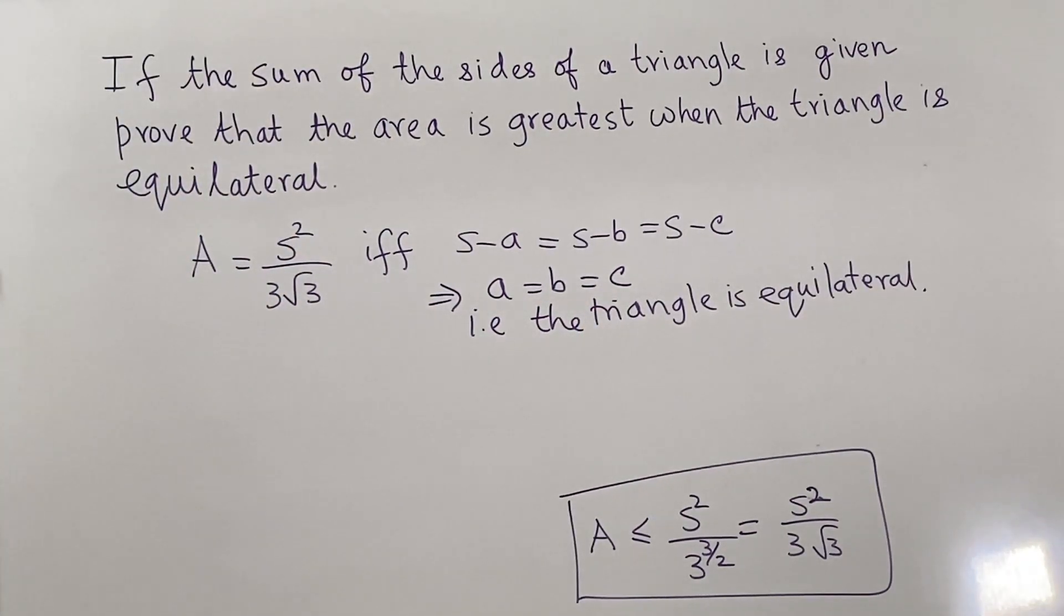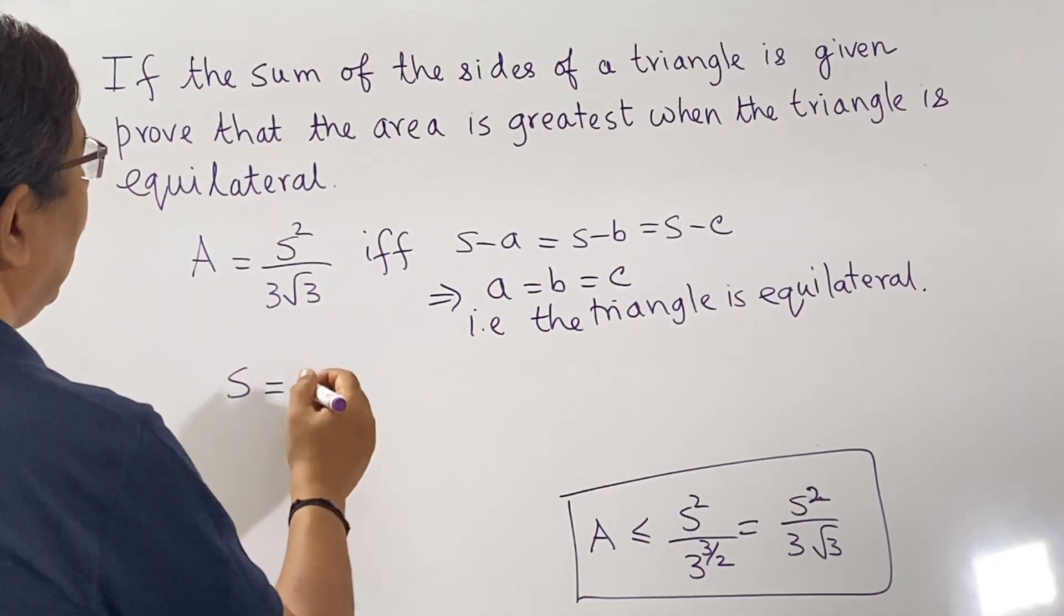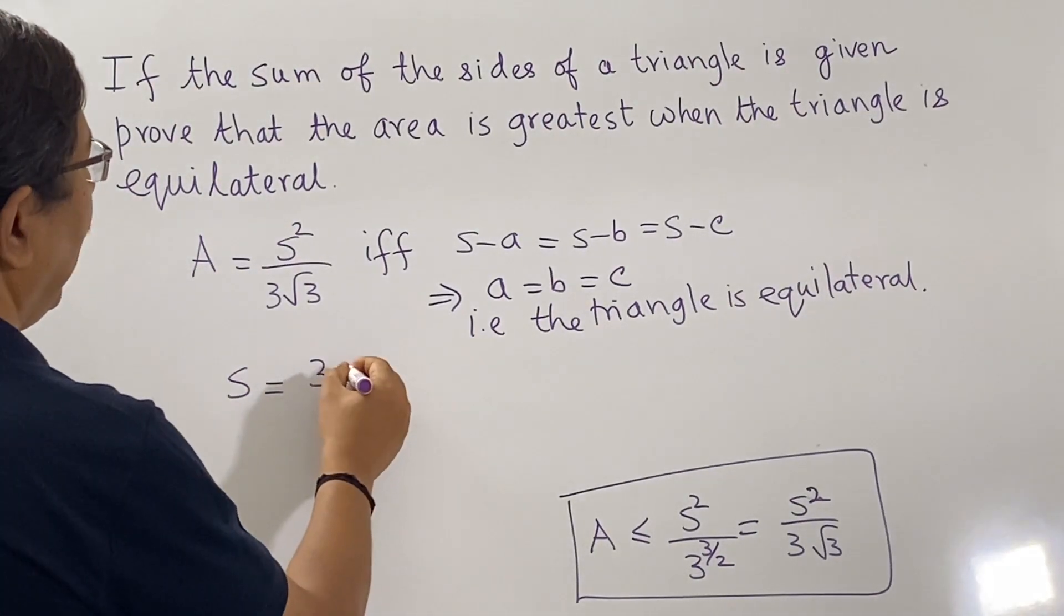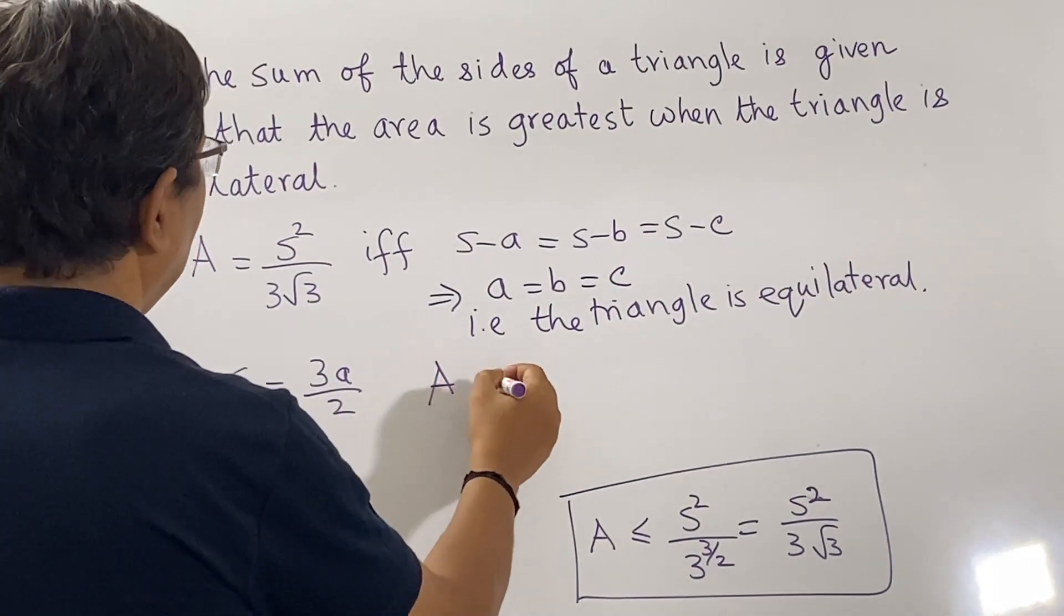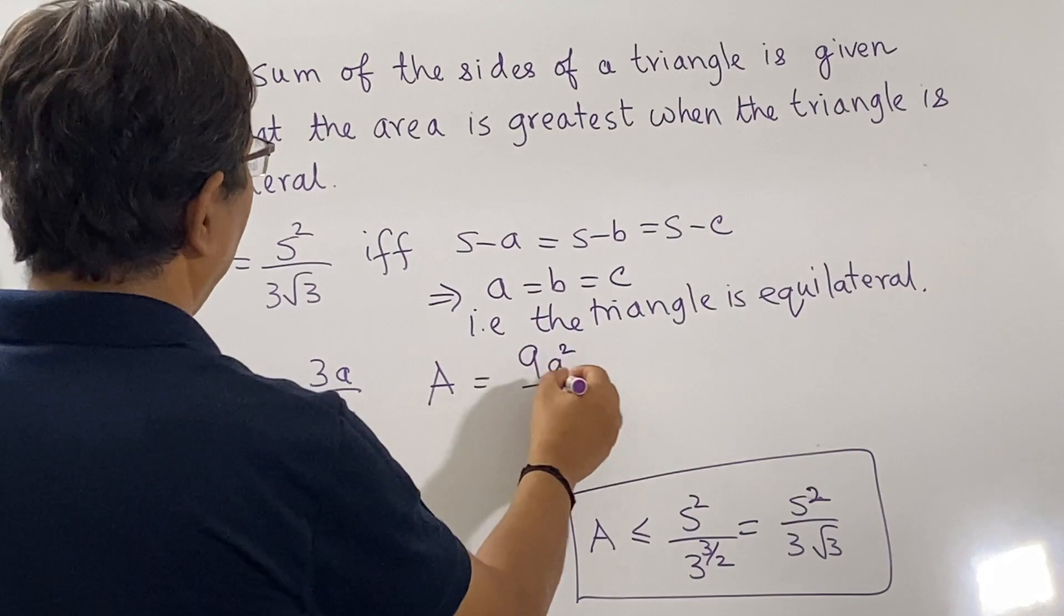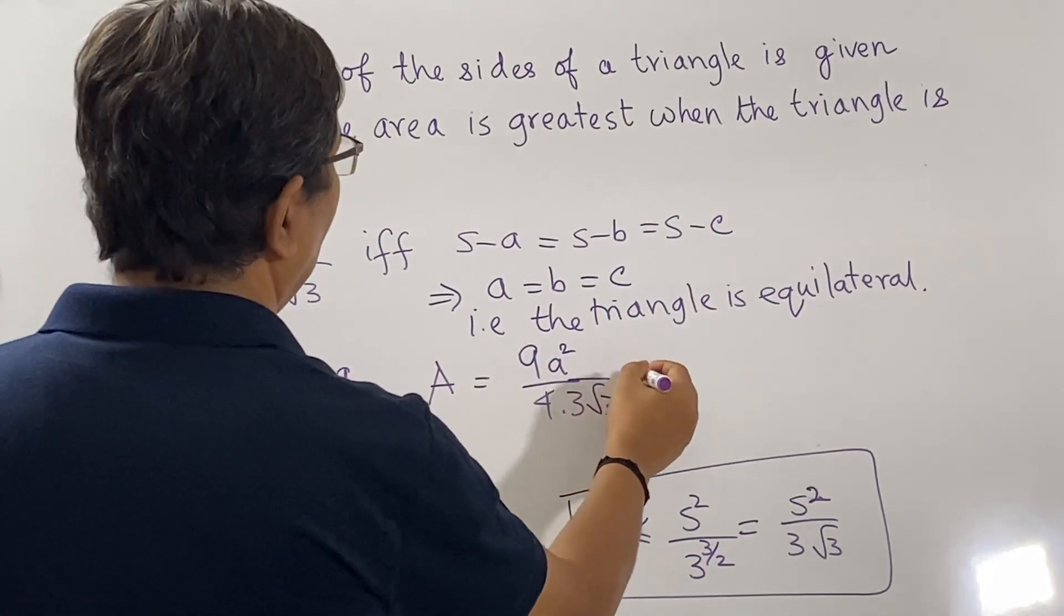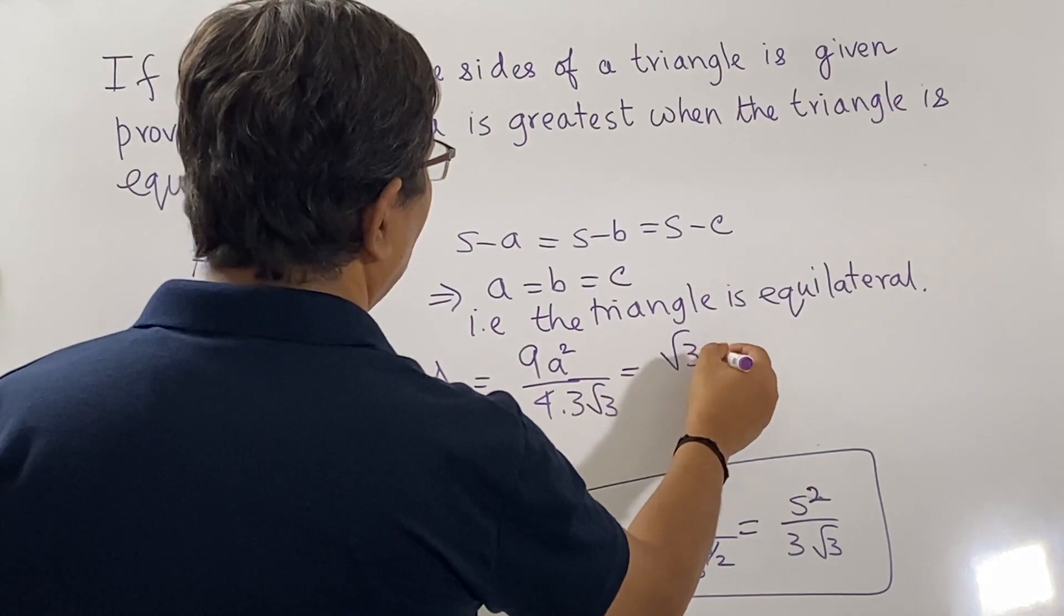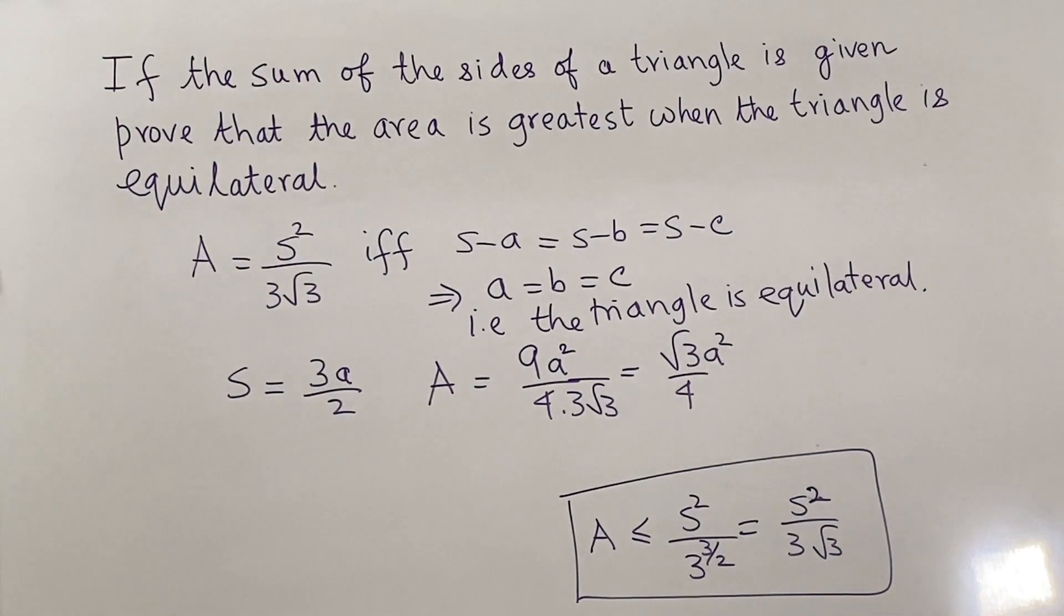Now when A is equal to B is equal to C, S is equal to 3A by 2. So A would then be 9A squared by 4 into 3 root 3, which gives us root 3 times A squared by 4, the very familiar formula for the area of an equilateral triangle. That's a good place to stop. Thank you.